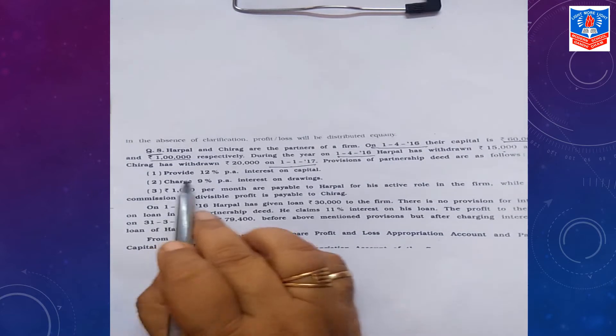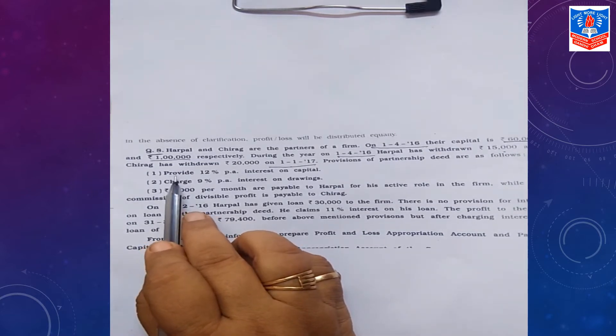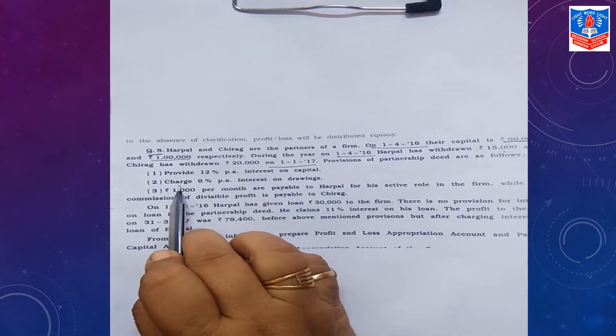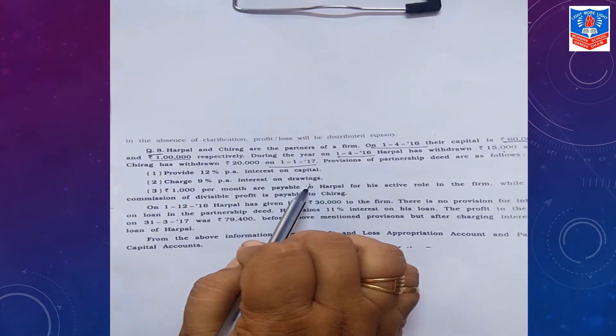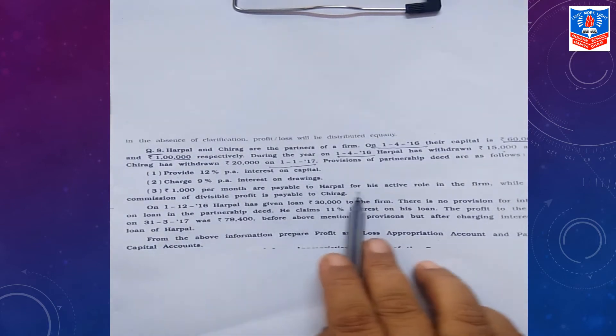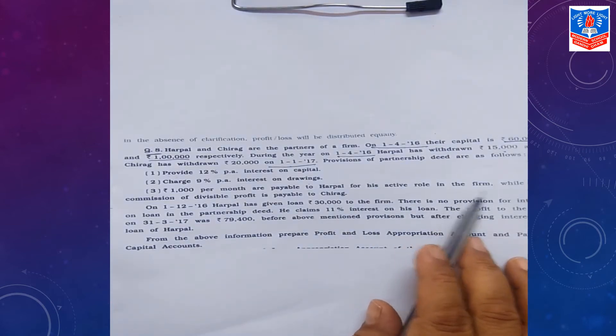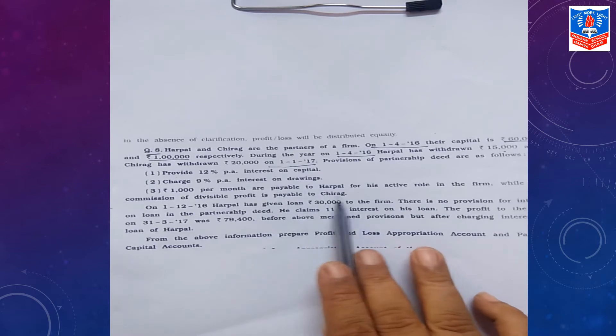As per the provisions of partnership deed, you are supposed to go for first adjustment: provide 12% interest on capital, charge 9% interest on drawings, and Rs. 1,000 per month is payable to Harpal for active role. While 5% commission on divisible profit is to be given to Chirag.